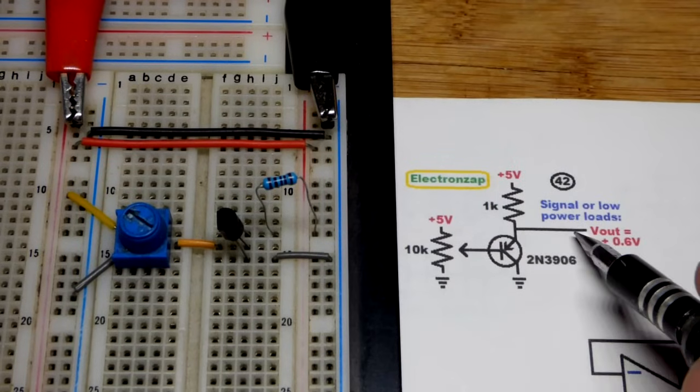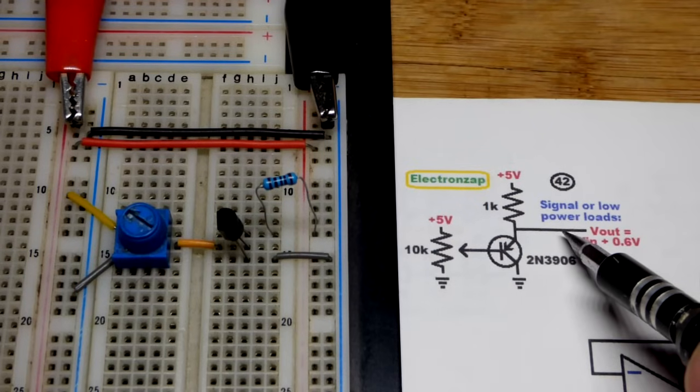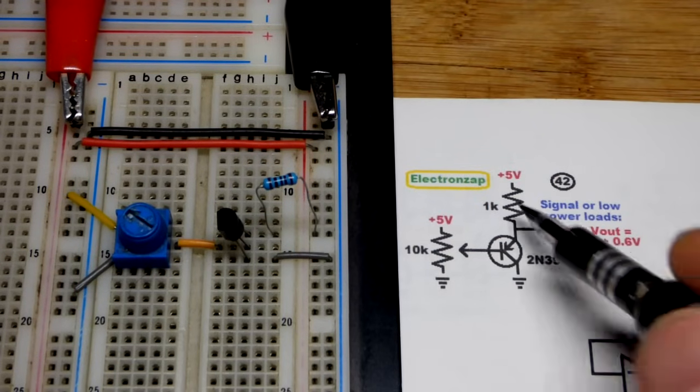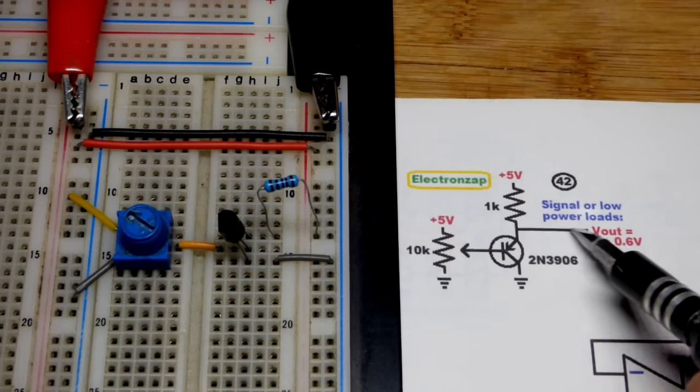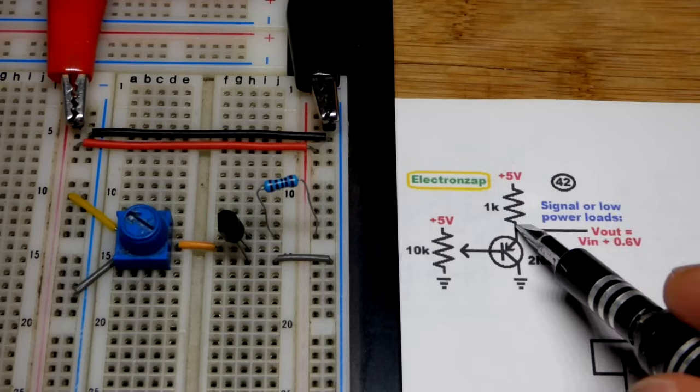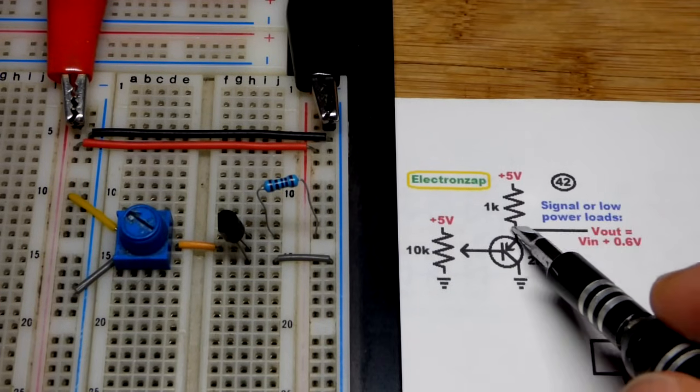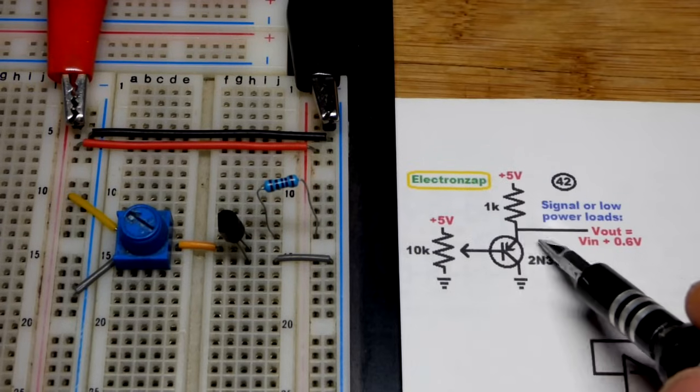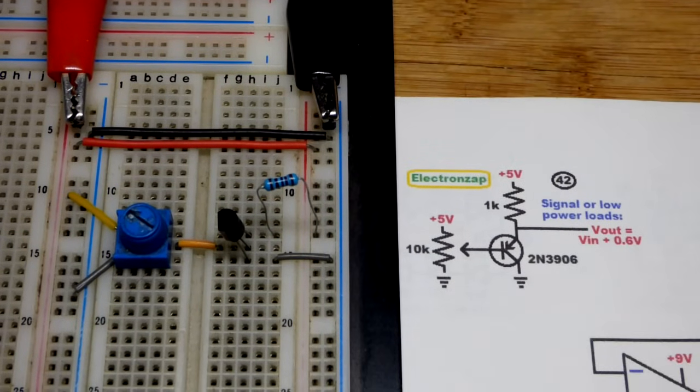And if you put like a load there it can draw some current depending on the value of that resistor right there. You can't exceed how much current the resistor will let through. But it's better to use this as a signal for something else. If you want to power a load then it's best to have it come from the positive supply and then the transistor will regulate the current going through it. But we're not going to dwell on that in this video.